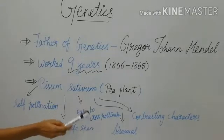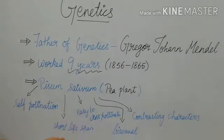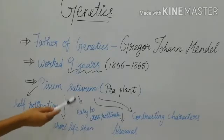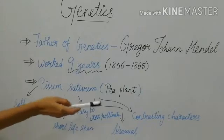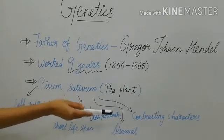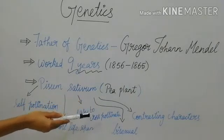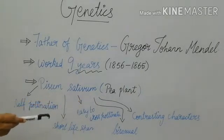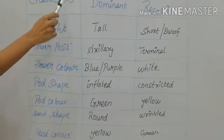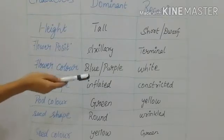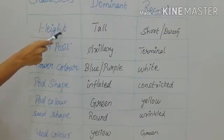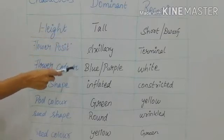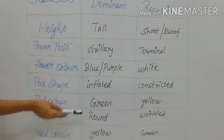Because of that annual life span, it was possible to follow several generations, and it was very easy for cross-pollination. The flowers are bisexual — the androecium and gynoecium are present in the same flower. This plant has well-defined contrasting characters. He selected 7 contrasting characters in this pea plant.